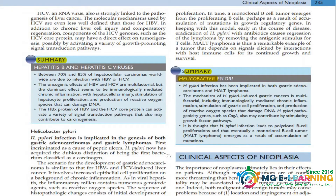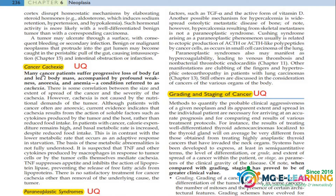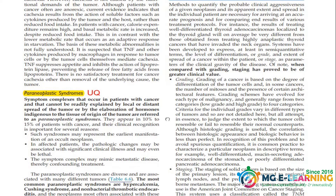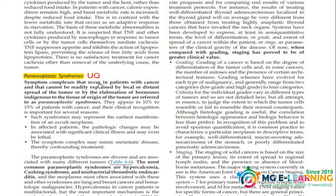Clinical aspects of neoplasia में से cancer cachexia आपका UQ है — इसे अच्छे तरीके से करना है, यह बहुत important है। इसके बाद paraneoplastic syndrome भी UQ आया हुआ है, इसे भी बहुत अच्छे तरीके से करना है।